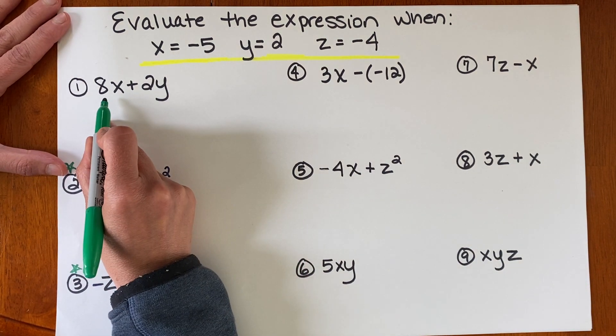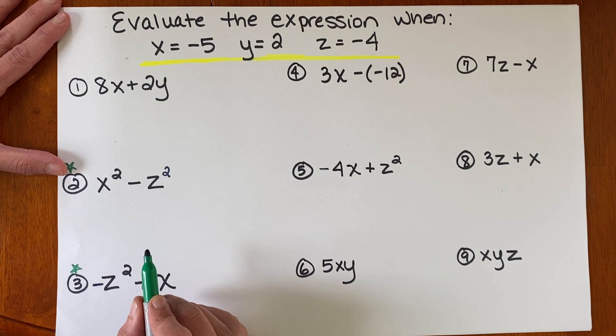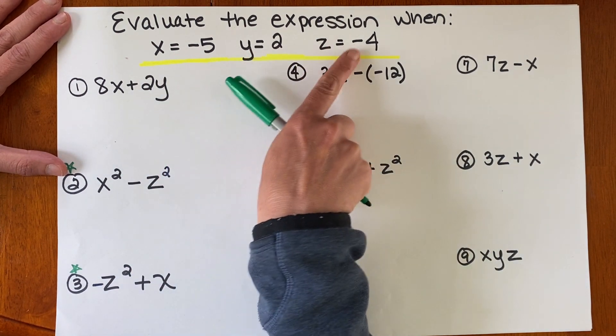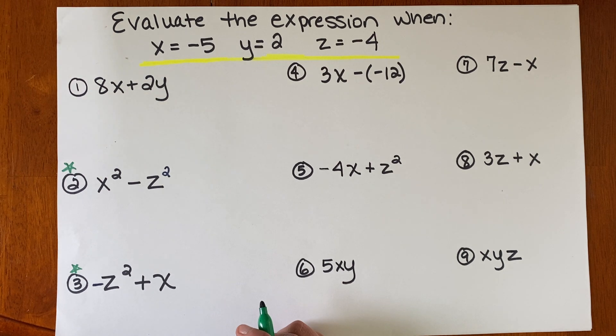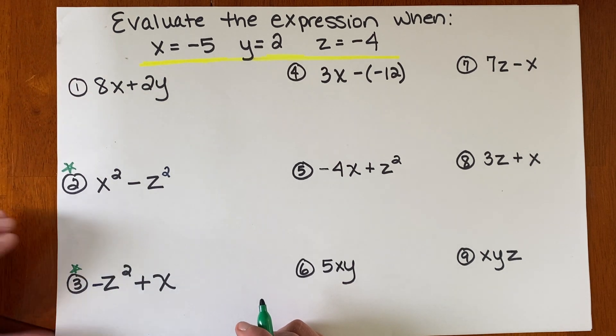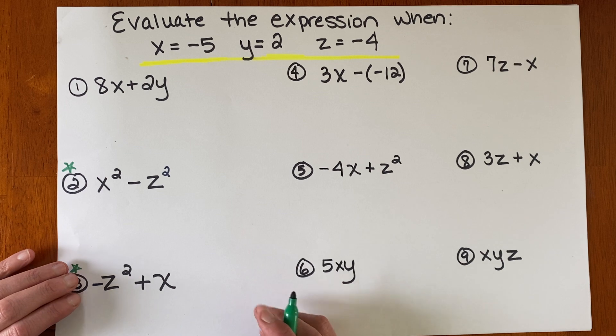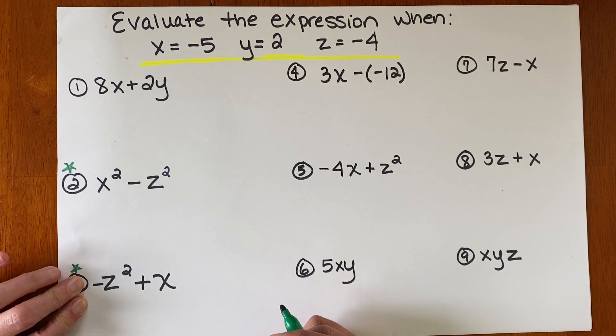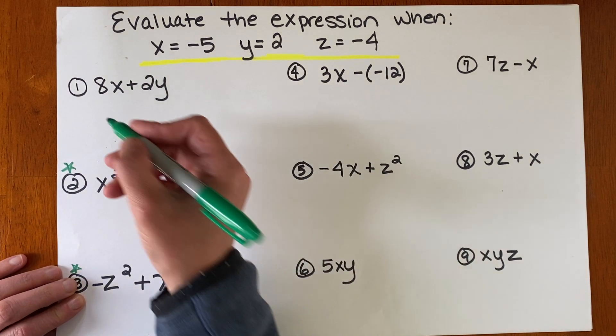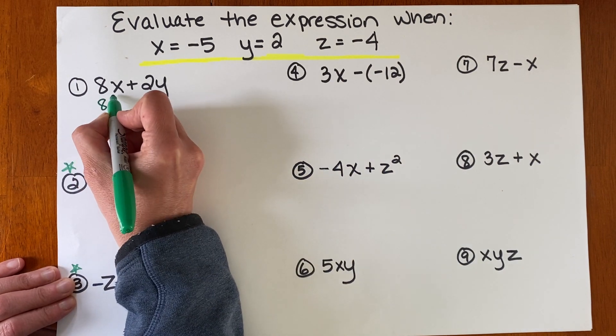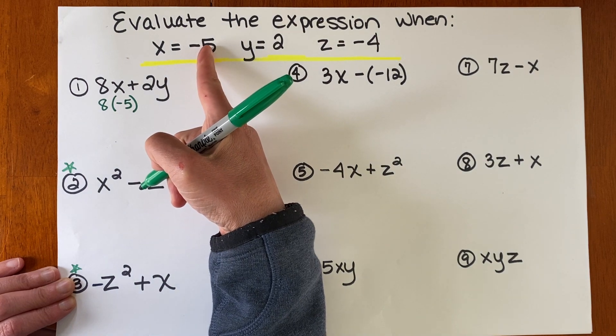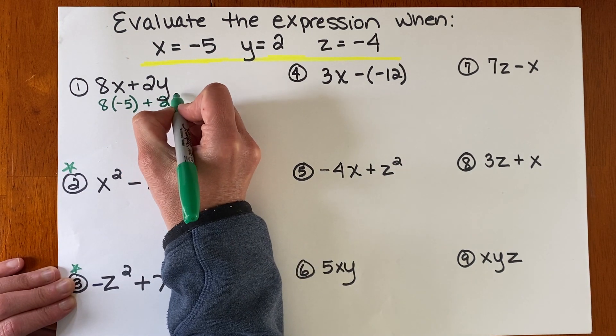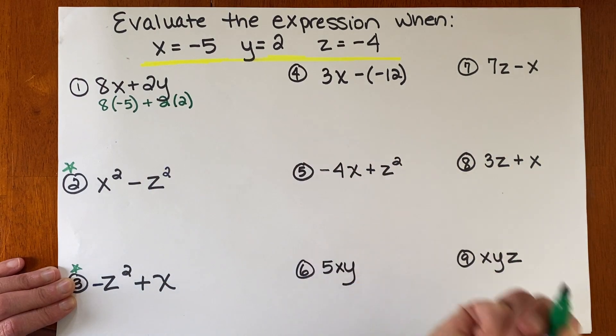Okay, number one. You always substitute in with parentheses. Also, make sure you plug in the correct number. You've watched me do this, and I plug in the wrong number. Oops. So if you plug in the wrong number, you're going to get it wrong. That's really good teaching right there, right? We did this at the beginning of the year, we just didn't do it with negatives. So now I'm going to do it with the negatives. So this is 8 times negative 5, because x is negative 5, plus 2 times 2, right?